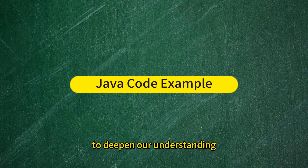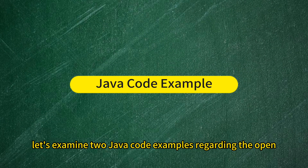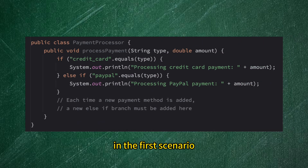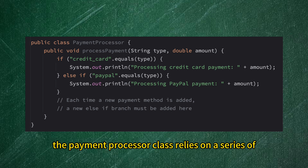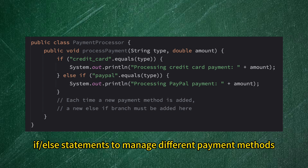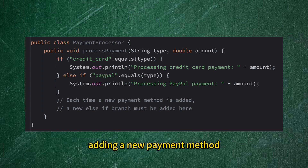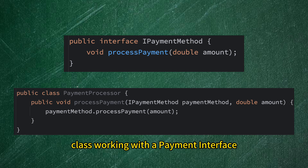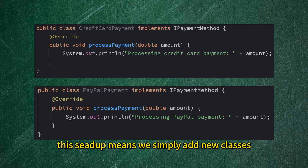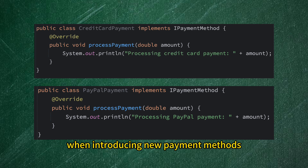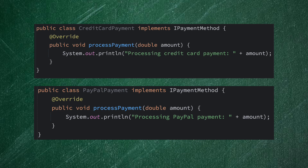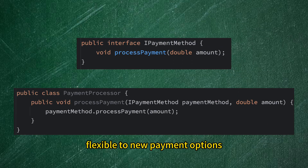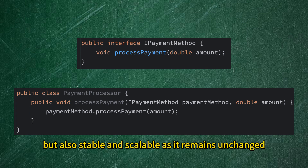To deepen our understanding, let's examine two Java code examples regarding the Open-Closed Principle. In the first scenario, which doesn't align with the principle, the PaymentProcessor class relies on a series of if-else statements to manage different payment methods. Adding a new payment method thus requires altering the existing code, clearly breaching the principle. In contrast, a compliant design involves the PaymentProcessor class working with a payment interface, IPaymentMethod, to process payments. We simply add new classes that implement the IPaymentMethod interface when introducing new payment methods without modifying any existing code, making the payment processor flexible, stable, and scalable.